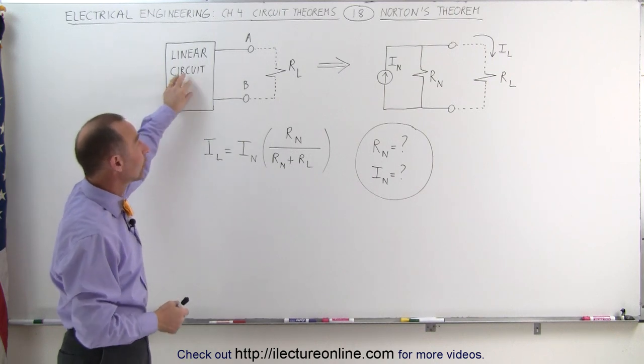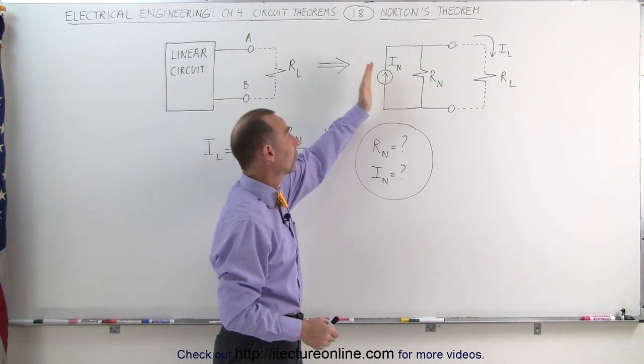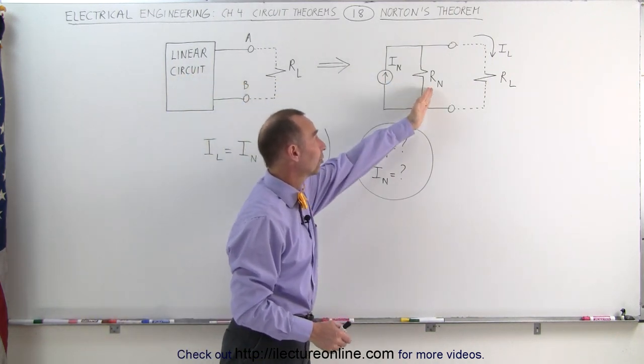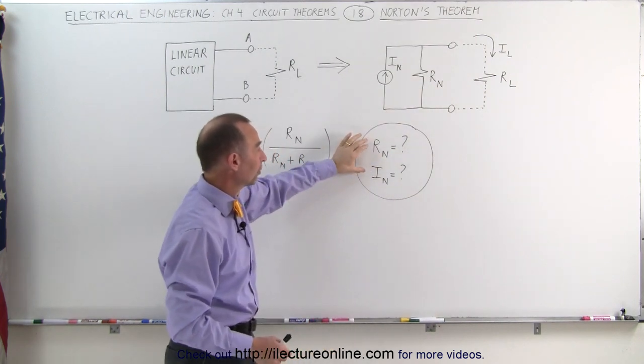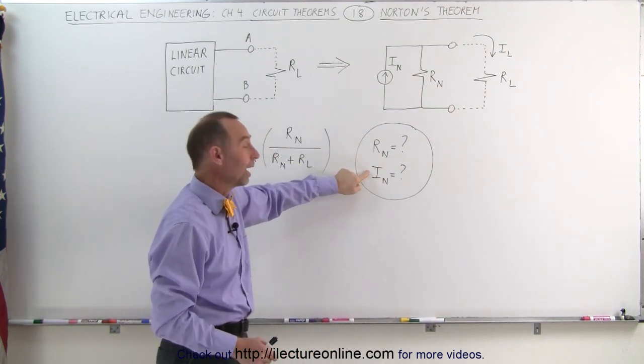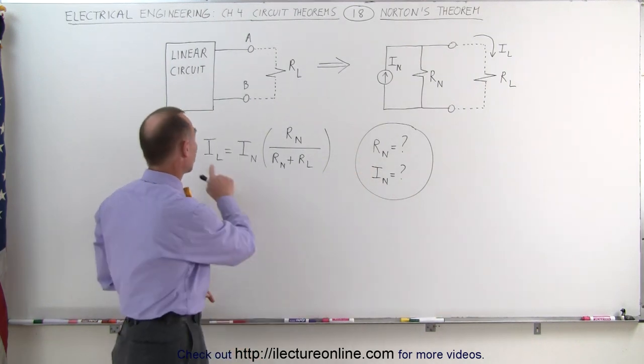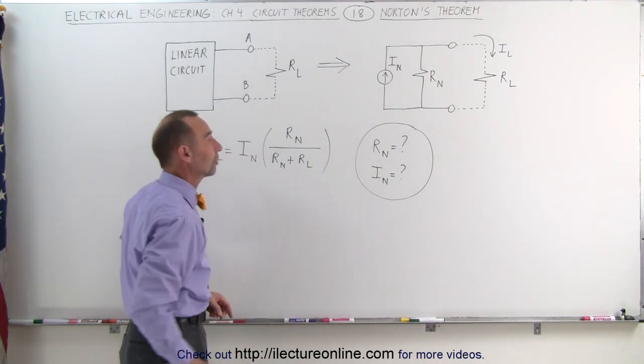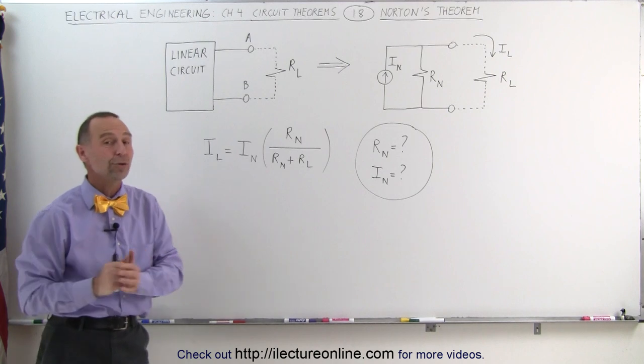We simply take the linear circuit, convert it to something that looks like this, a singular current source, a resistor in parallel, and then the exercise becomes, how do we find the Norton's resistance and how to find the current, in order to determine the current through the load resistor of the circuit.